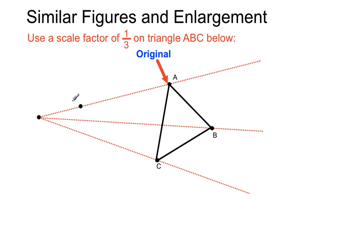And if we take a point that is a third the distance as the original one was, we'll call that the image of A. And we'll take a point that is a third of the distance that the original was for B. We'll create a point that is the image of B, or B dash.